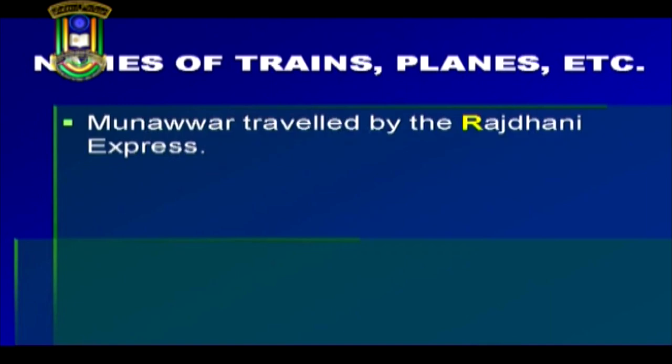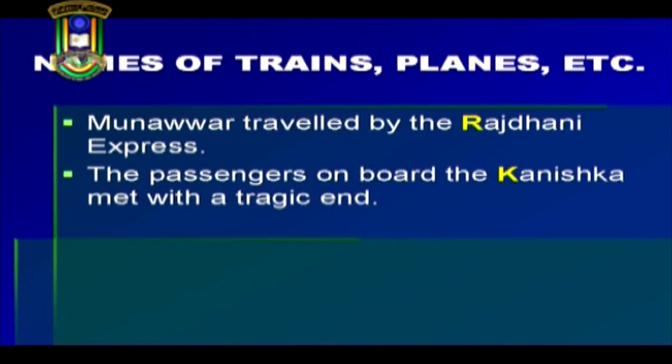Let us now see how capital letters are also used to indicate names of different modes of transport — it could be the name of a train, a plane, a ship or any other mode of transport. Study these examples: Munawar traveled by the Rajdhani Express. The passengers on board the Kanishka met with a tragic end. Rajdhani Express is the name of a train while Kanishka is the name of a plane, and in each of these sentences the modes of transport have been capitalized.